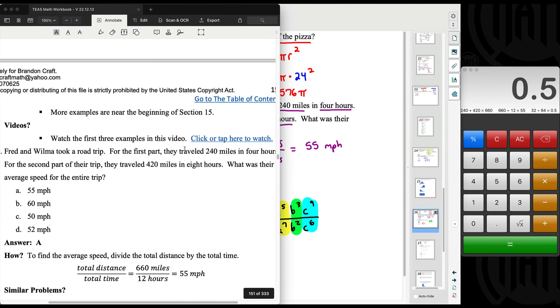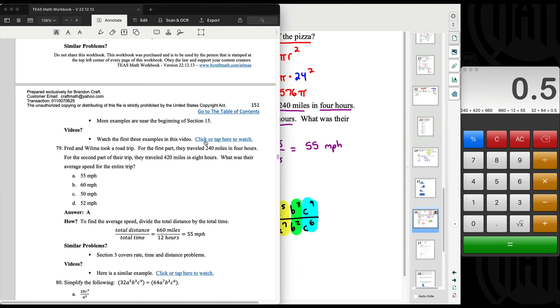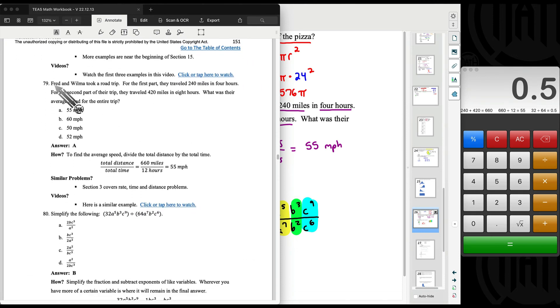Section 15, more circle problems. First three examples in this video, watch that for additional examples. 79, I did mention take the total distance and divide by the total time. That's how we got 55 miles per hour. Section 3, rate, time, and distance problems. Additional video there.